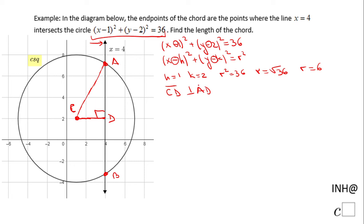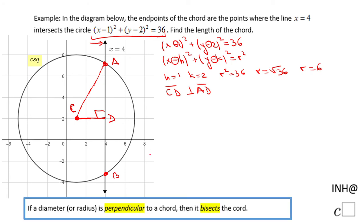We have a very important property: if a diameter, radius, or part of the radius is perpendicular to a chord, which is the case here, then it bisects the chord. So these two pieces are congruent: AD equals DB. If I find only one of them, I can get AB by simply multiplying by two.